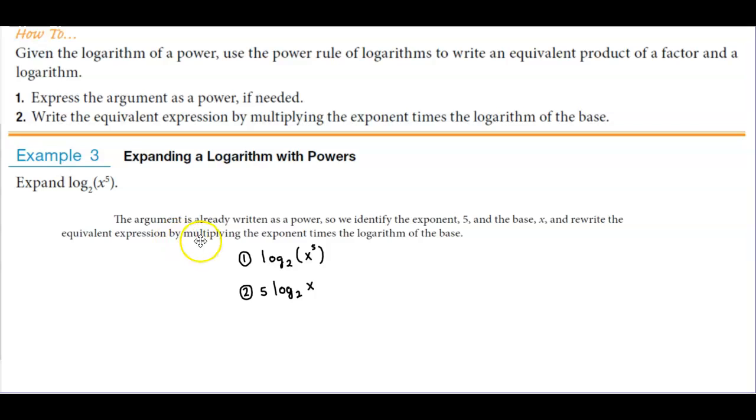So for this example it says the argument is already written as a power, so we identify the exponent as five and the base x, and then rewrite the equivalent expression by multiplying the exponent times the logarithm of the base.